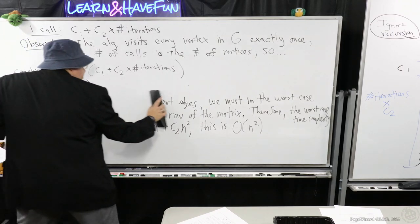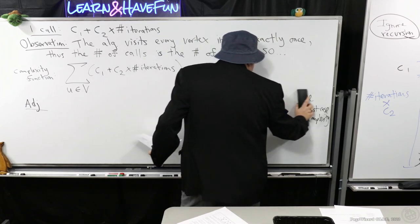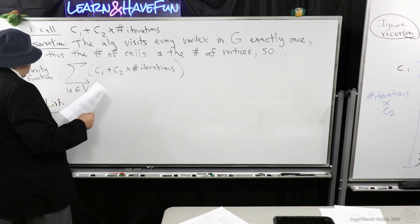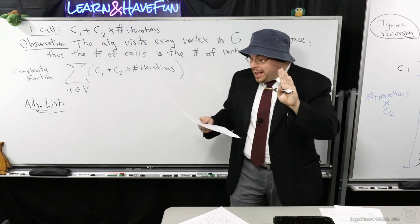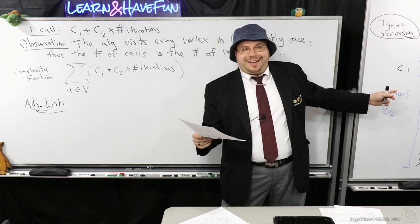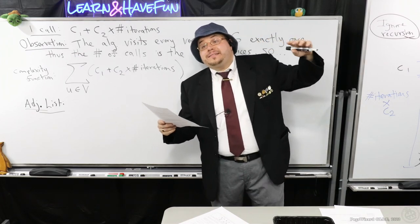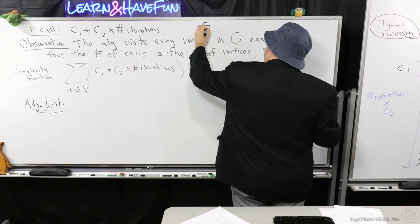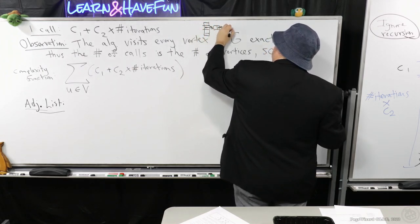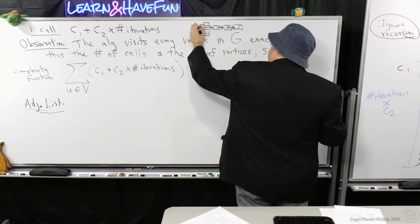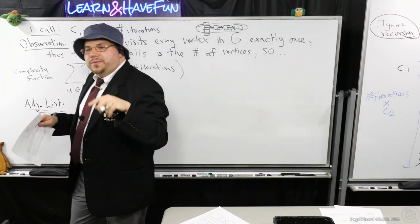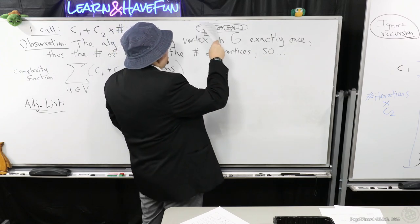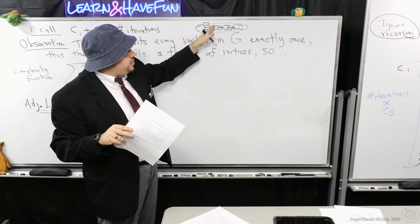For the adjacency list, to access the incident edges, we have access to that information in the linked list that comprises the adjacency list. Each node in the list represents one incident edge or neighbor, so the number of nodes corresponds to the degree of a vertex. To traverse through each of those nodes, you go through that list, which has length equal to the degree of U.